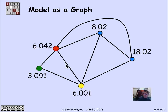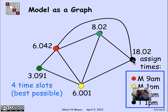Let's try coloring the exam graph. There's a triangle, so we'll need three different colors for it. For another triangle, we reuse green to be economical. Then another vertex is adjacent to three different colored vertices, so it needs a fourth color. This time, four colors turn out to be best possible. It corresponds to a schedule where 6042 is Monday at 9 AM, 6001 is Monday at 1 PM, 802 and 3091 are both Tuesday at 9 AM, and 1802 is Tuesday at 1 PM.